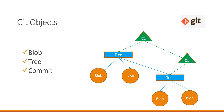Git is a content addressable file system, so it stores the content in terms of binary objects. Blob means binary large object. Whatever files we store in git, they will be stored as a blob object, which basically contains the checksum of the file content.